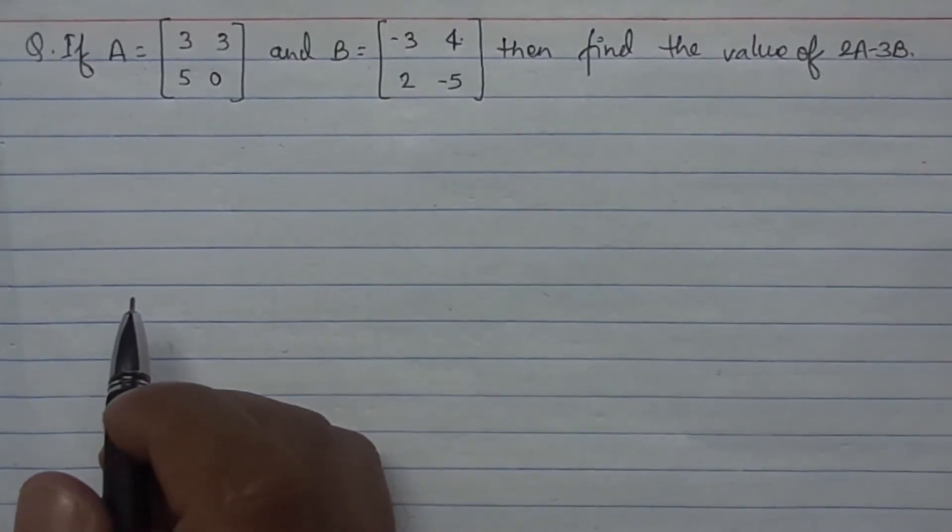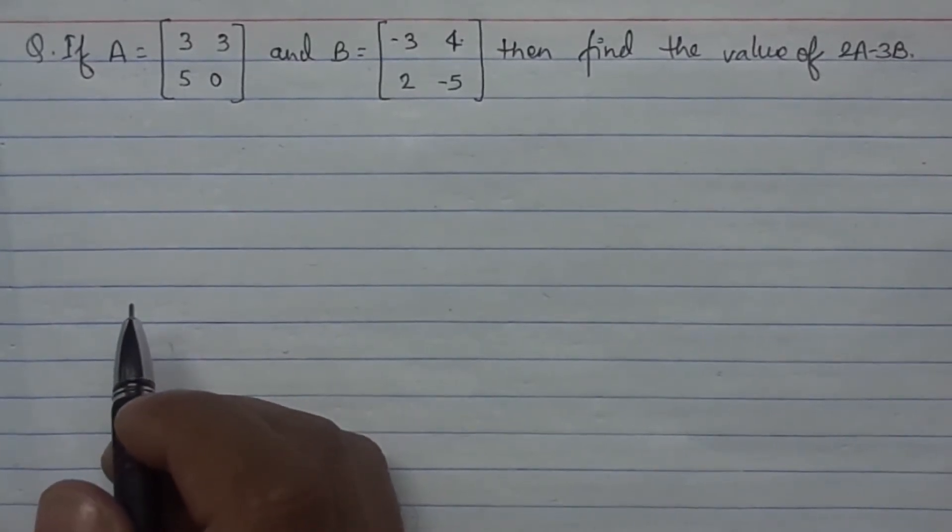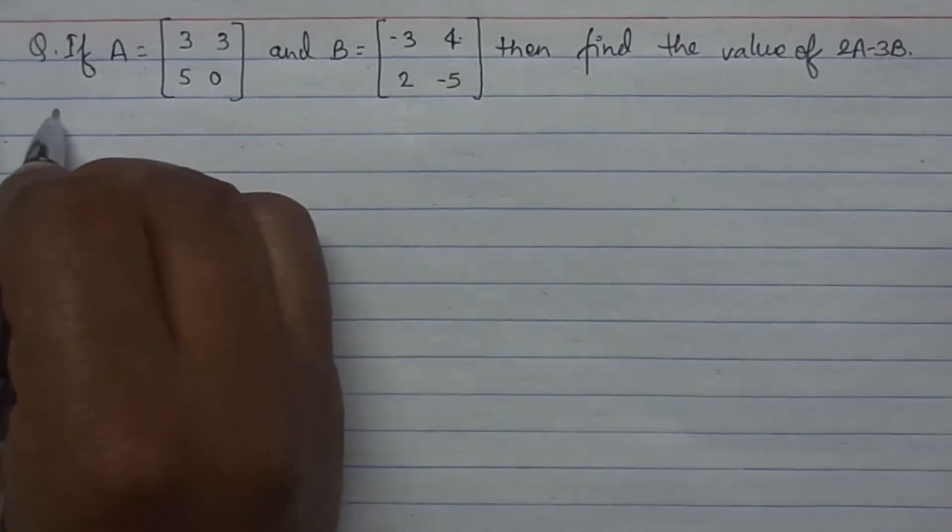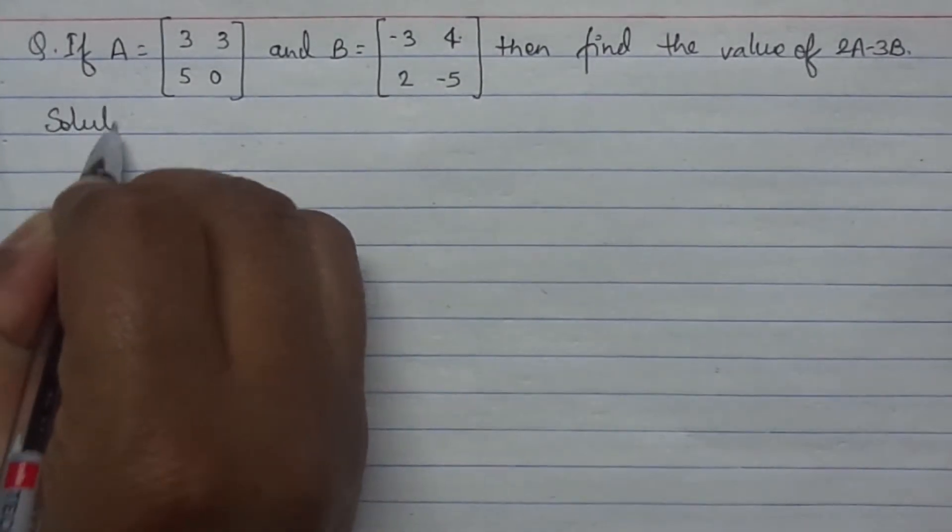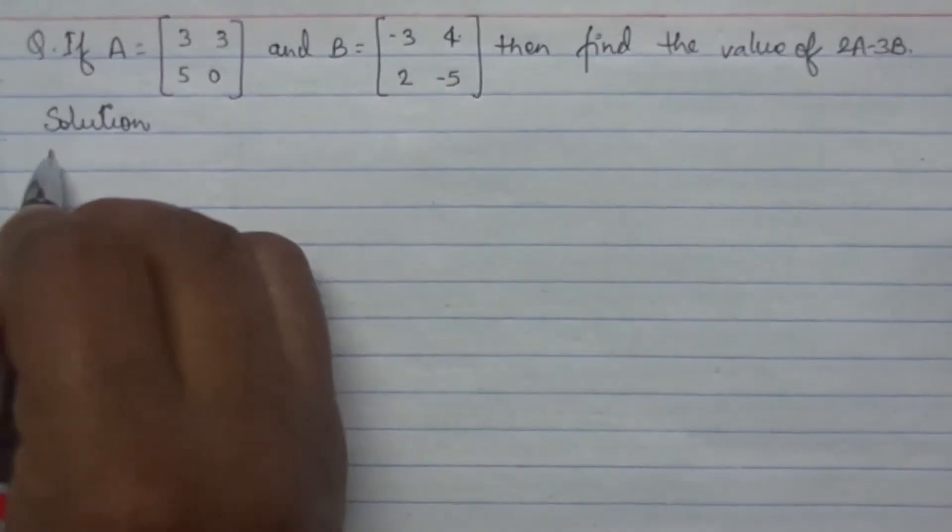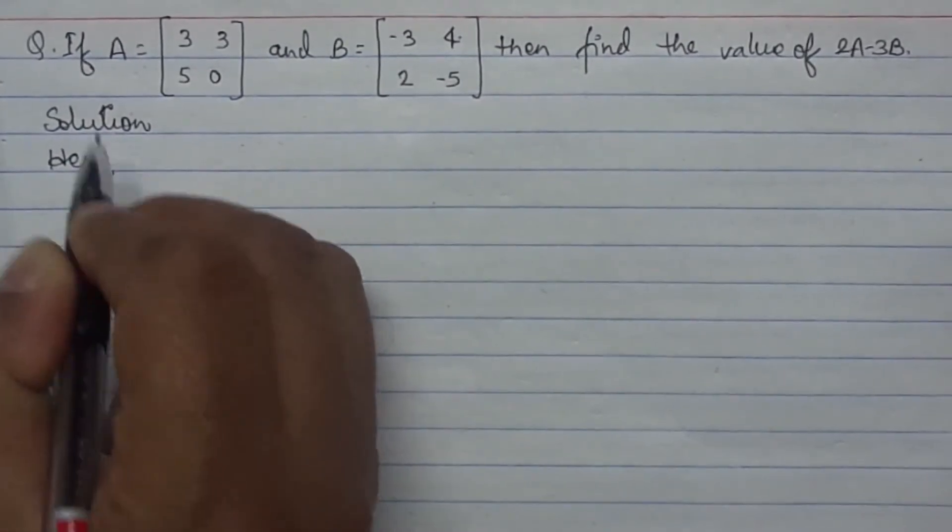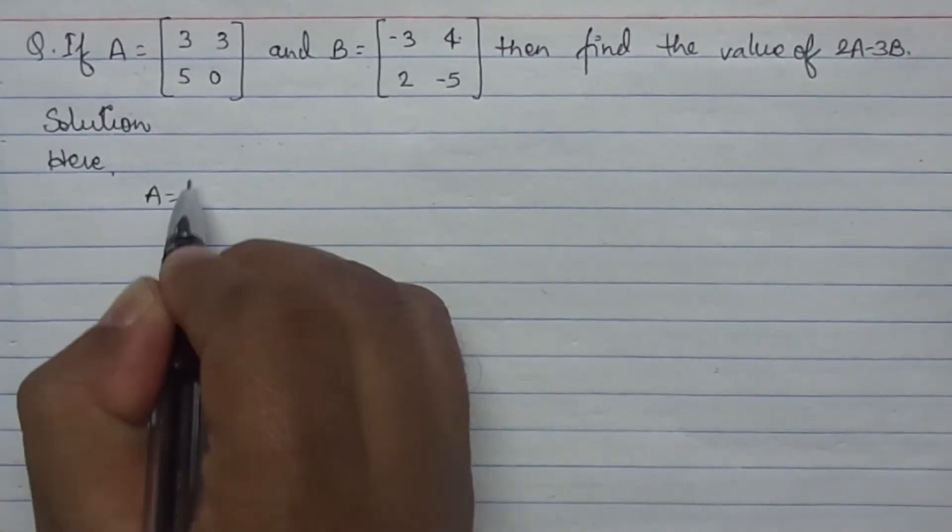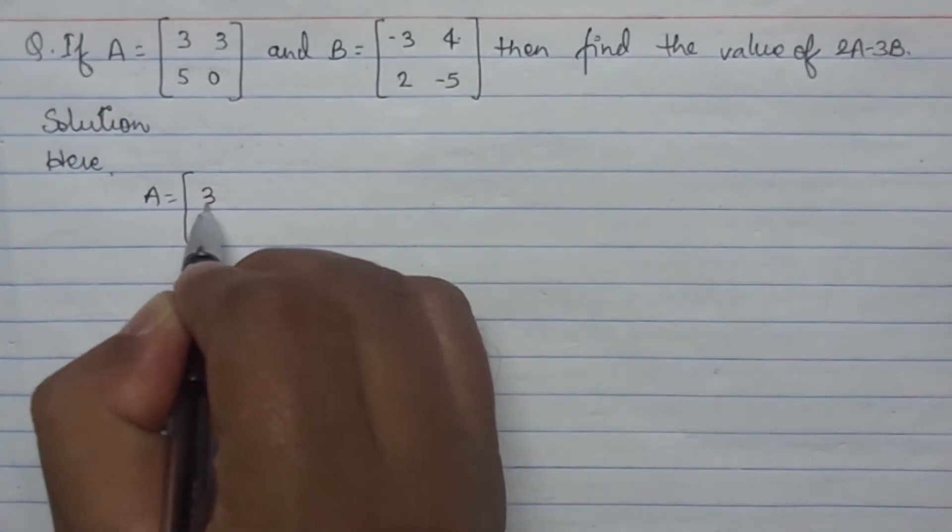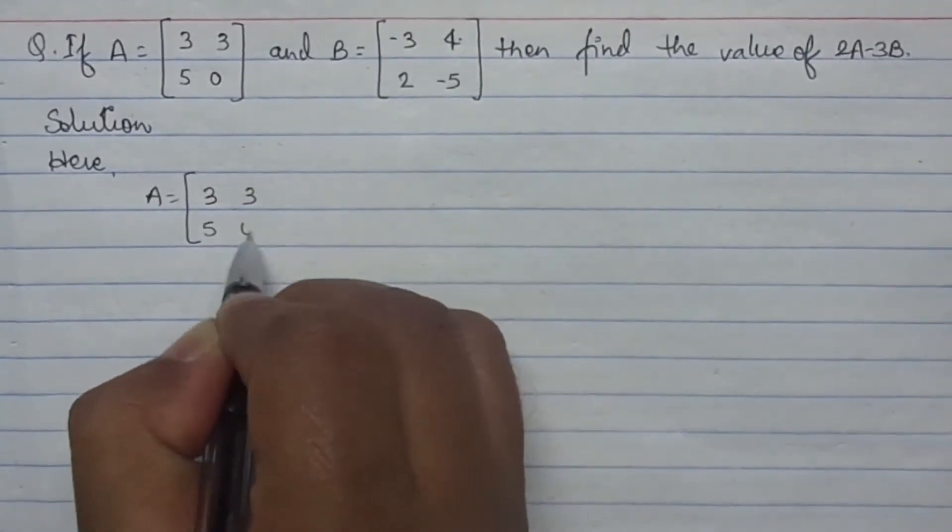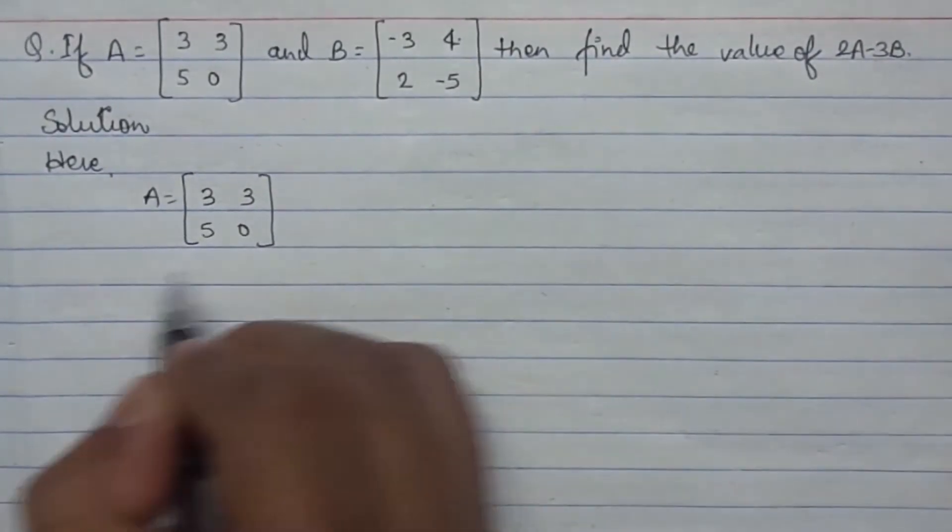Today I am going to solve a question related to SE examination. We are going to copy the question that's written here. A equals [3 3; 5 0].